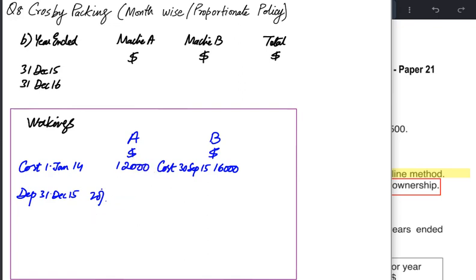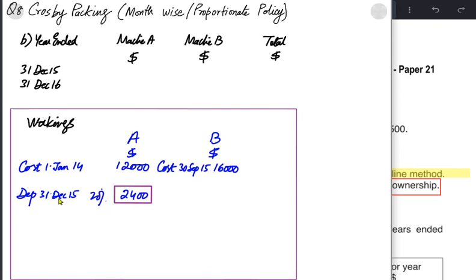Applying 20% to Machine A's cost of 12,000 gives annual depreciation of 2,400. We charge depreciation for the entire year on Machine A because we didn't buy it in 2015 — we bought it in 2014. It was used for the full year from 1st January to 31st December 2015, all 12 months, so no month-wise adjustment is needed.